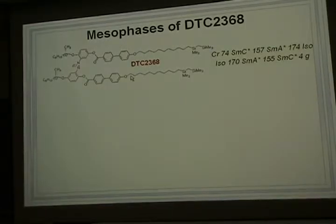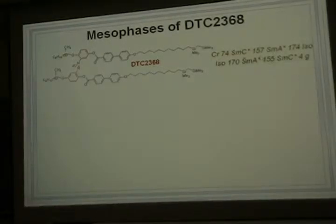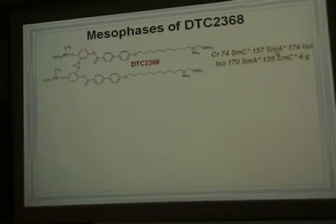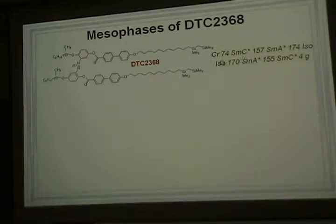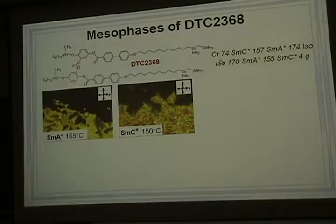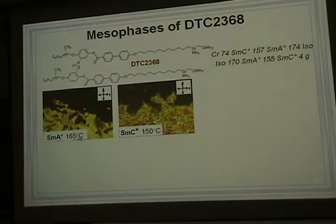This is the phase diagram for this host compound 2368. It shows the enantiotropic phase sequence. The sequence is isotropic, smectic A, smectic C*, and then crystal. It shows the textures of this compound. This is the smectic A phase in homeotropic and planar areas. For the planar area we see focal-conic textures. This is the smectic C* phase, showing schlieren textures.